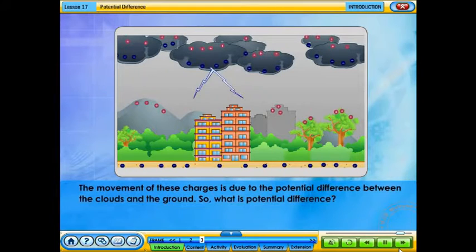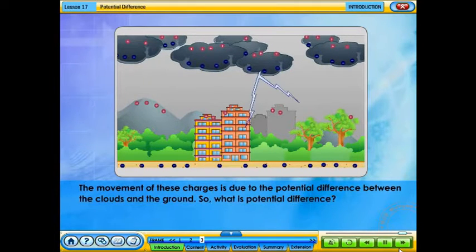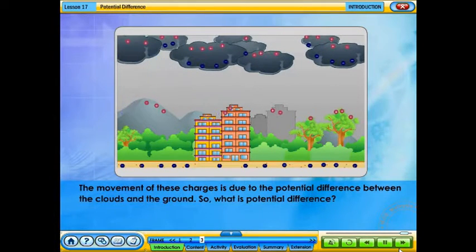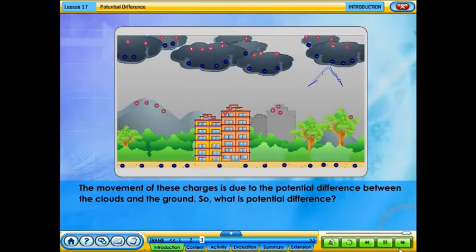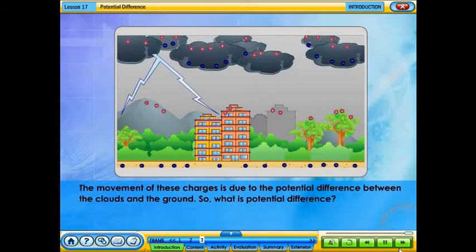The movement of these charges is due to the potential difference between the clouds and the ground. So, what is potential difference?